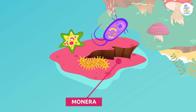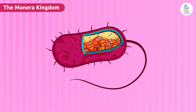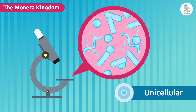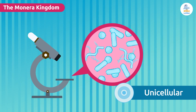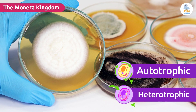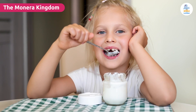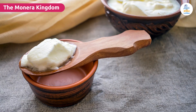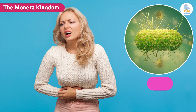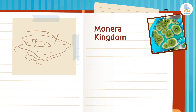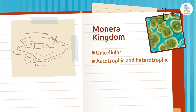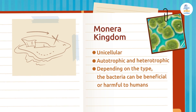The monera kingdom is characterized by the simplest and most primitive forms of life. It is made up of unicellular organisms so small that you can only see them with a microscope. Bacteria can either make their own food or take it from the environment, meaning they can be autotrophic or heterotrophic. Did you know that some bacteria are beneficial to humans, like those that make yogurt, while others are harmful and can cause diseases such as salmonella? The characteristics of the monera kingdom are: unicellular organisms that can be autotrophic or heterotrophic, with some beneficial and some harmful to humans.